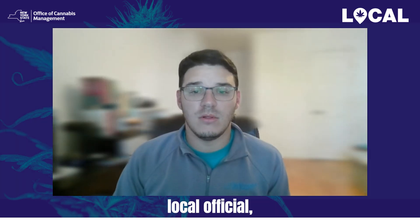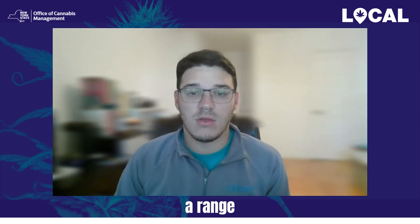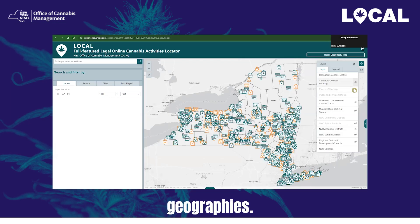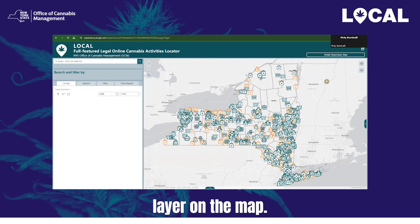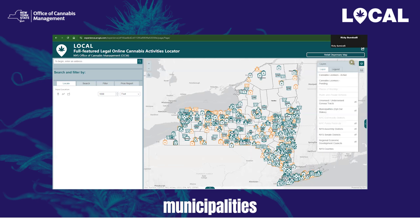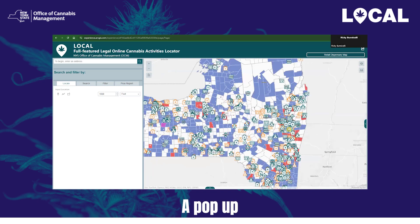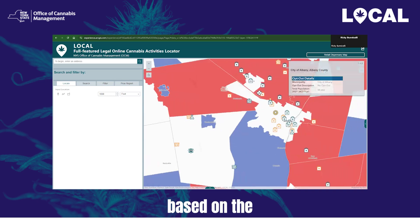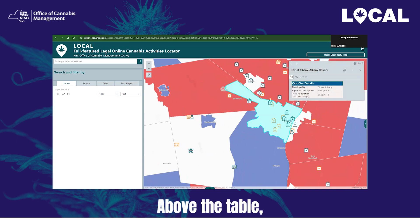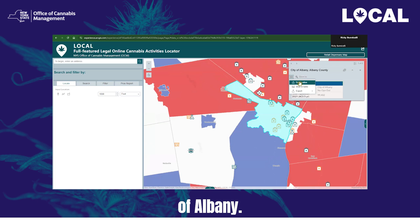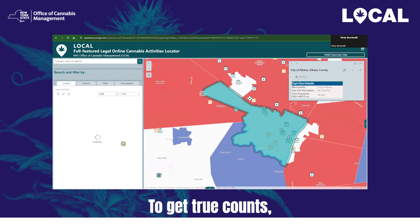If you're an assembly person, senator, local official, or just data curious, Local offers you the ability to search and assess a range of geographies across New York State. The first option is map interaction. For example, to look at the cannabis landscape in the City of Albany, enable the municipalities layer by navigating to the layers and legend button in the top right corner and clicking the eye icon next to the municipalities layer. The layer will appear on the map with white, red, blue, and purple polygons filled in by opt-out status. Pan over to the City of Albany and click on the underlying polygon. A pop-up will display showing the municipality name, opt-out description, and total population based on the latest ACS five-year survey. Click the four-circles icon and select Set Location. The Locate tab will begin compiling information for the City of Albany. Please note the default distance buffer is set to 1,000 feet — to get true counts, change the buffer to zero.